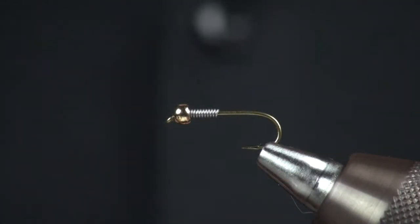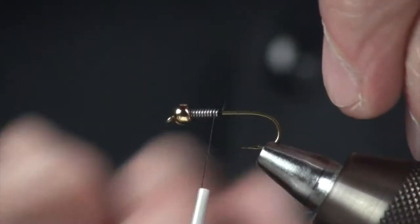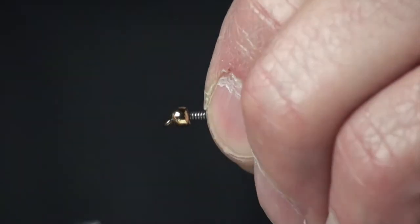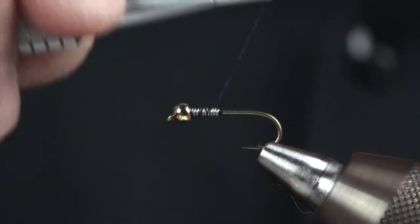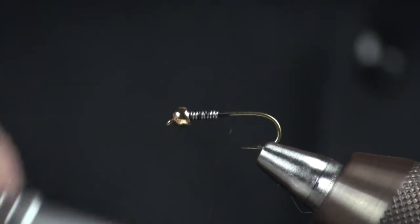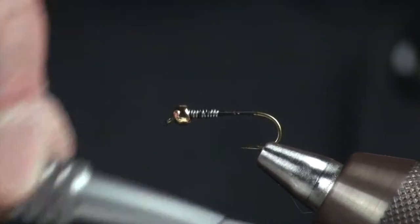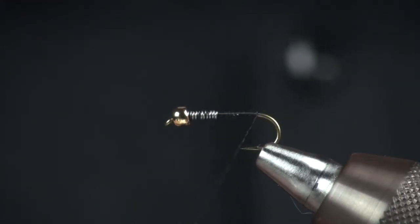The thread I'm going to use is some good old Danville six-ought, which happens to be also a 70 denier thread. I'm just going to run some wraps through the wire just to make that a little bit more secure. And I'm going to bring a thread base right back down to where I'm right over the barb of the hook.